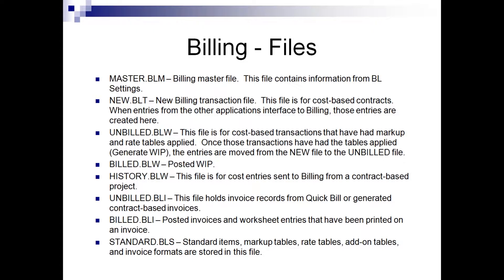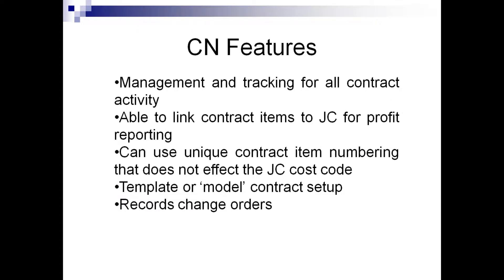The standard file holds all your standard items, markup tables, rate tables, add-on tables, and invoice formats — those are not stored in the master file, they're stored in the standard file. Now briefly, the CN features: this is what links billing and job cost together so that billing knows which jobs are contract-based bills — it's kind of the interface there.